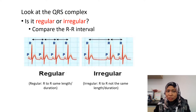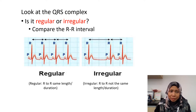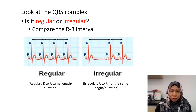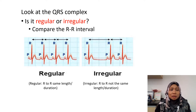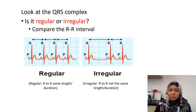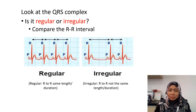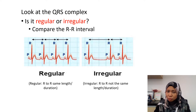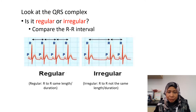We need to estimate the heart rate by looking at the ECG strip and determining whether it is regular or irregular by comparing the RR intervals. On the first ECG strip, the RR interval is regular — from one R to the next R, the distance is the same, so this is a regular rhythm. On the second ECG strip on the right side, the RR from the first R to the second R compared to the second R to the third R is not the same, so this is an irregular rhythm.